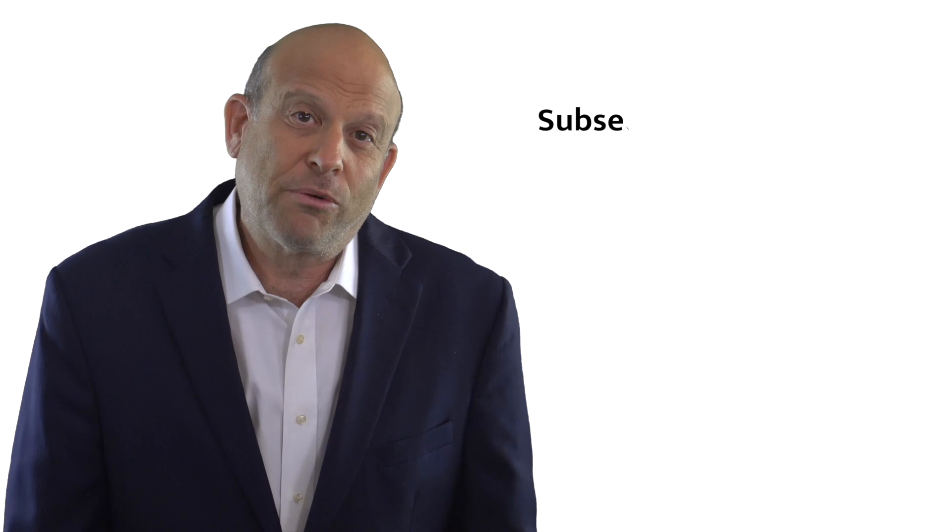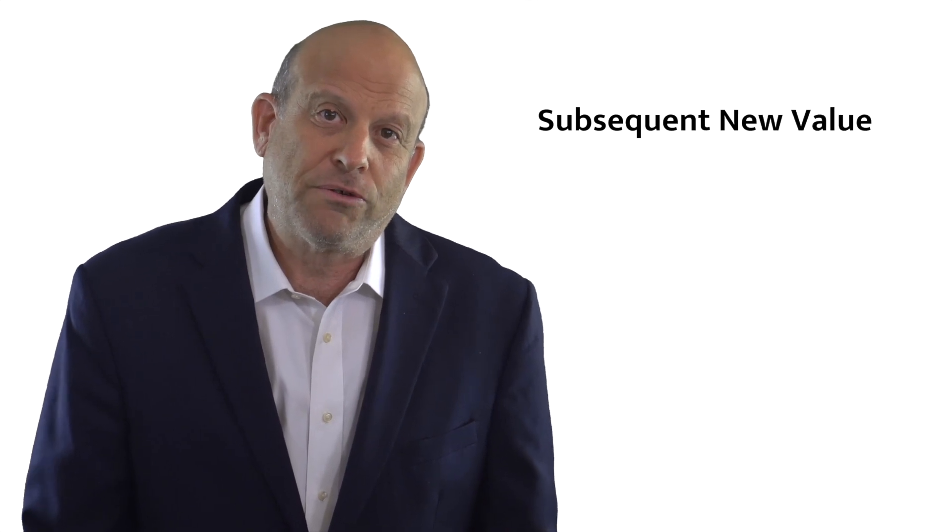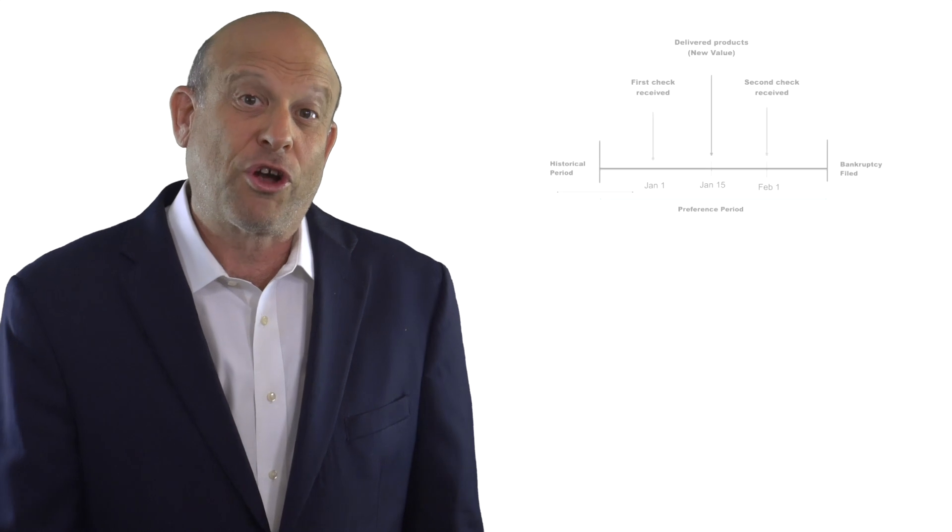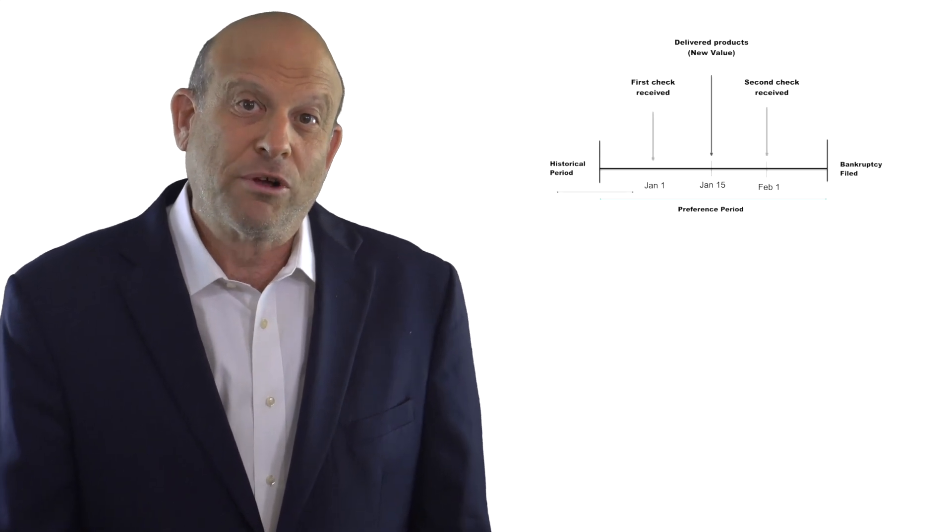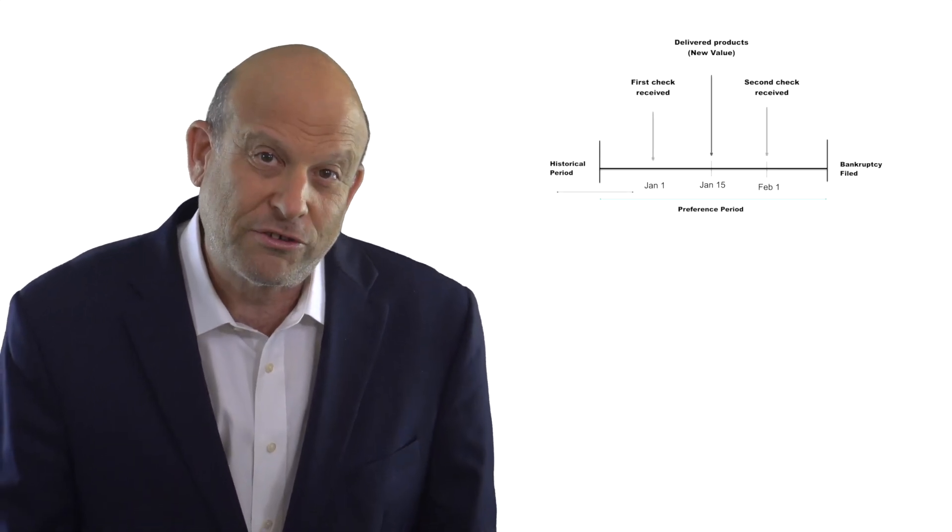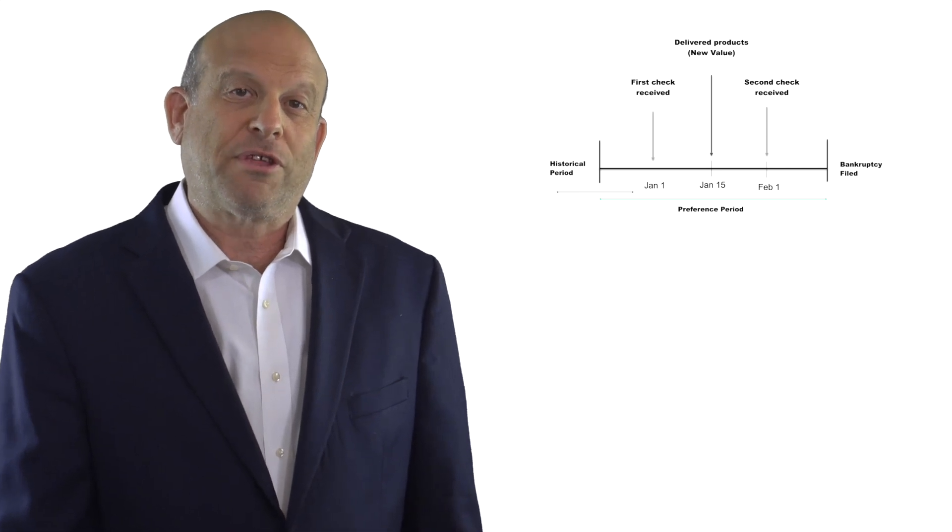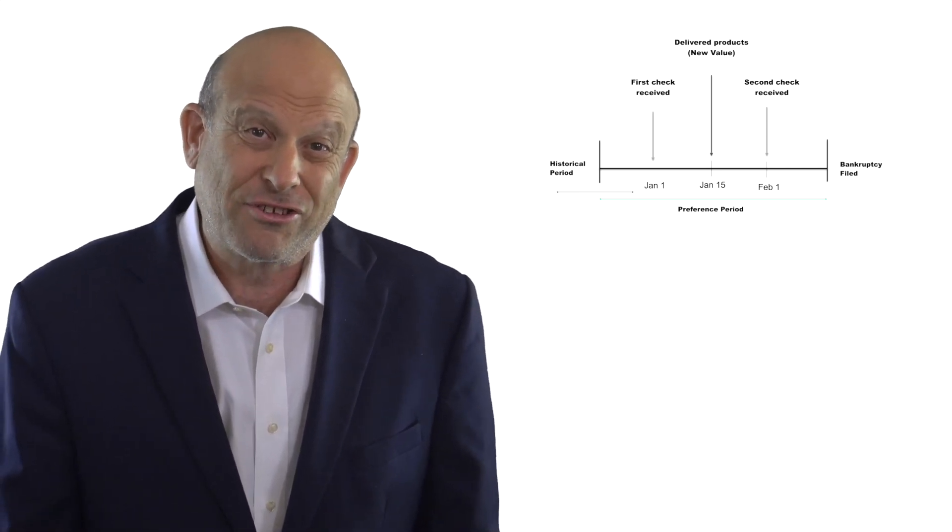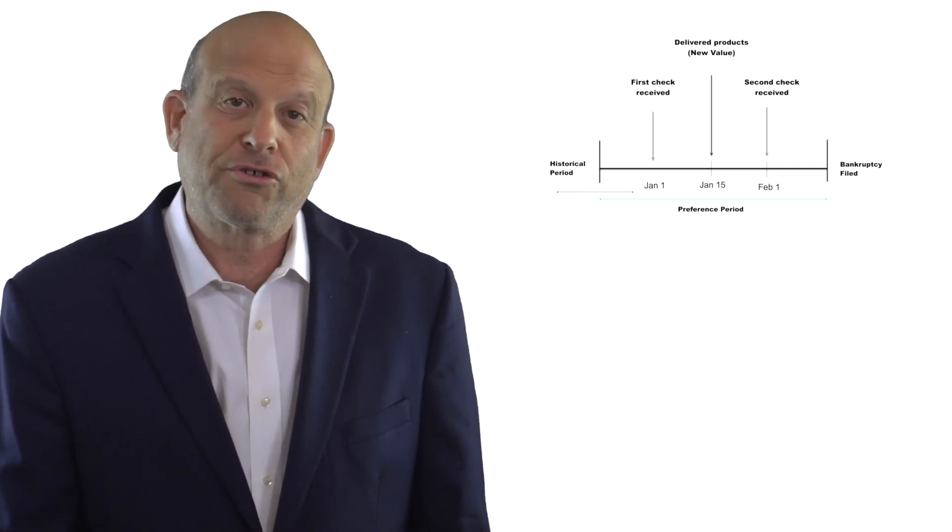The second defense I want to talk about is called the subsequent new value defense. It works like this. If you got a preferential payment of $10,000 on Wednesday and you shipped $10,000 worth of machines on Thursday on credit and you were later not paid for the machines, then you can set off the $10,000 loss against the prior preferential payment.